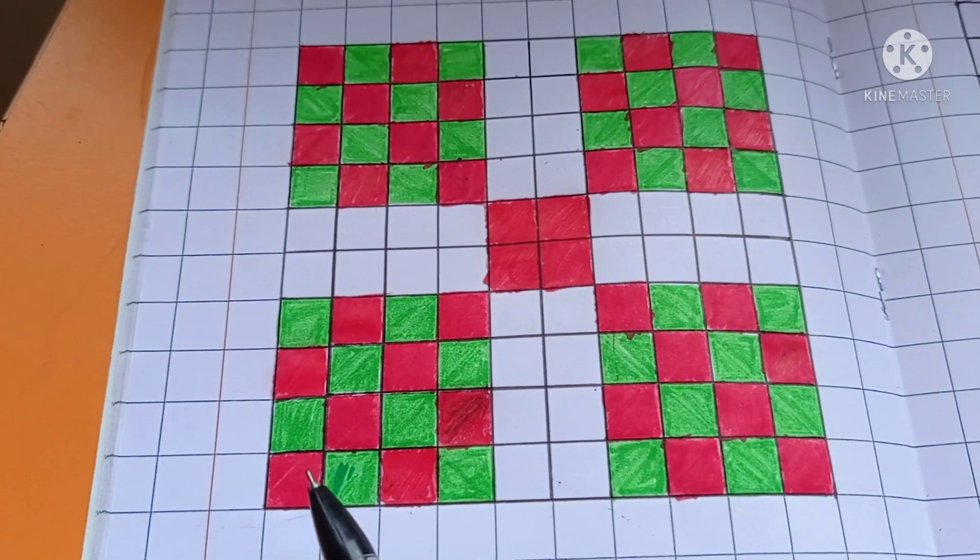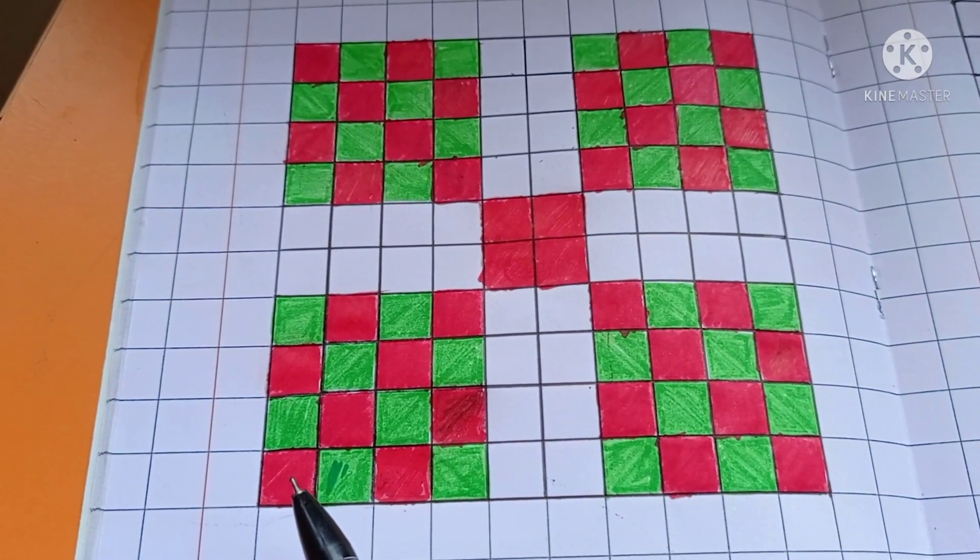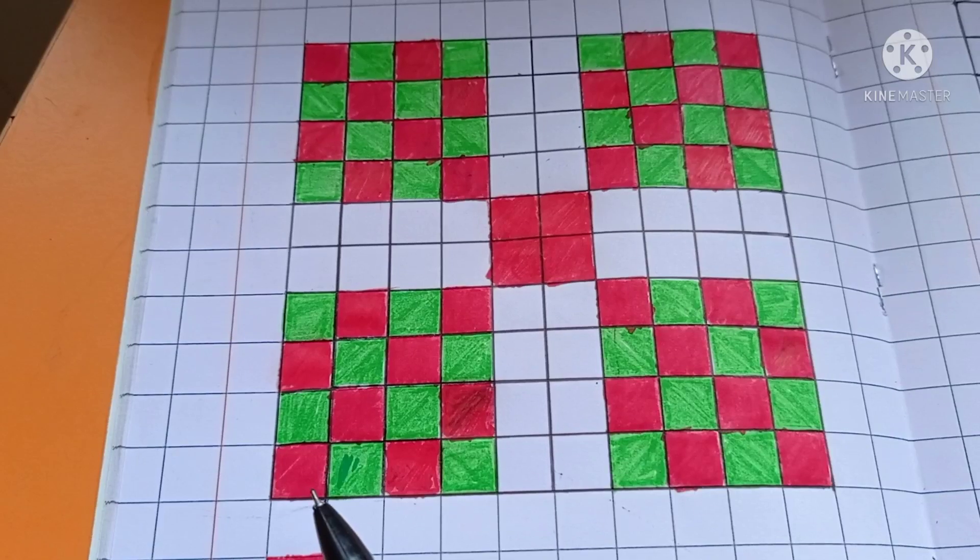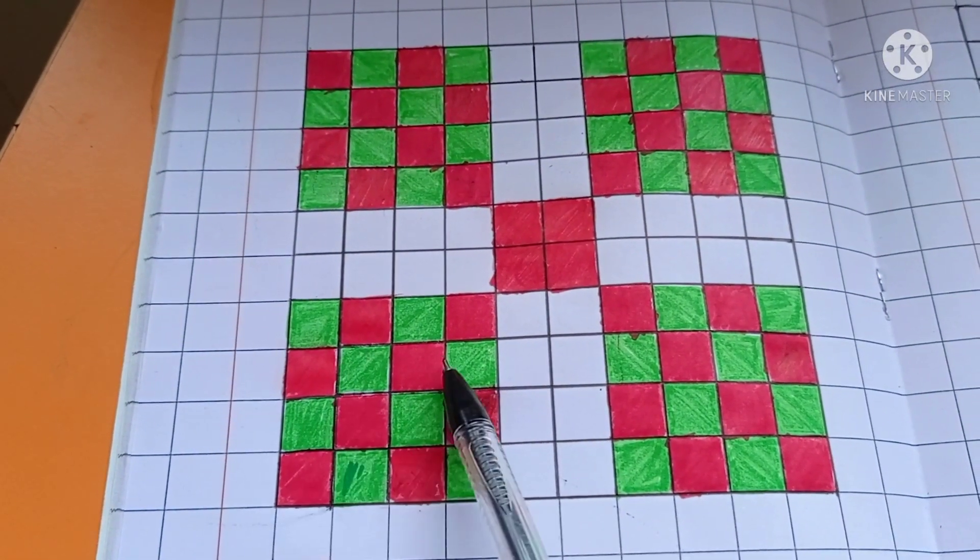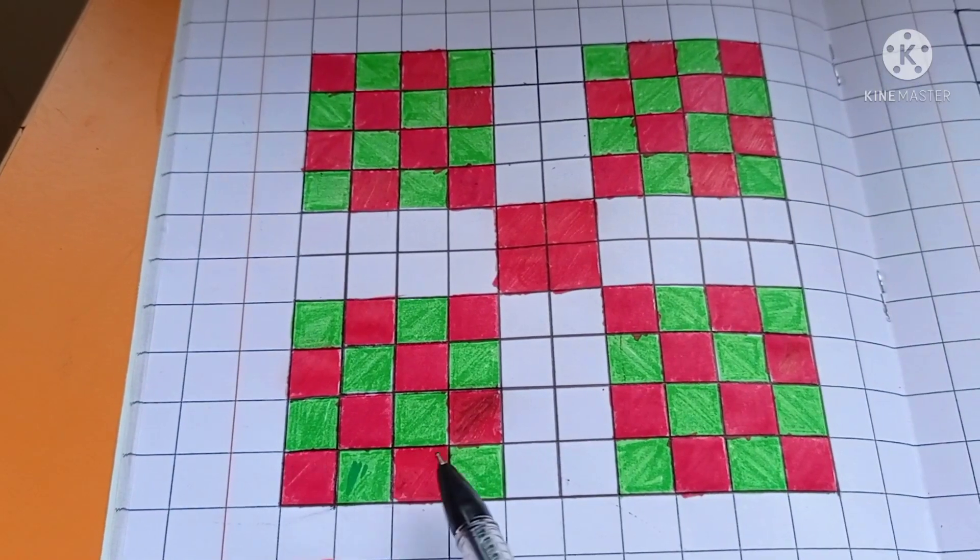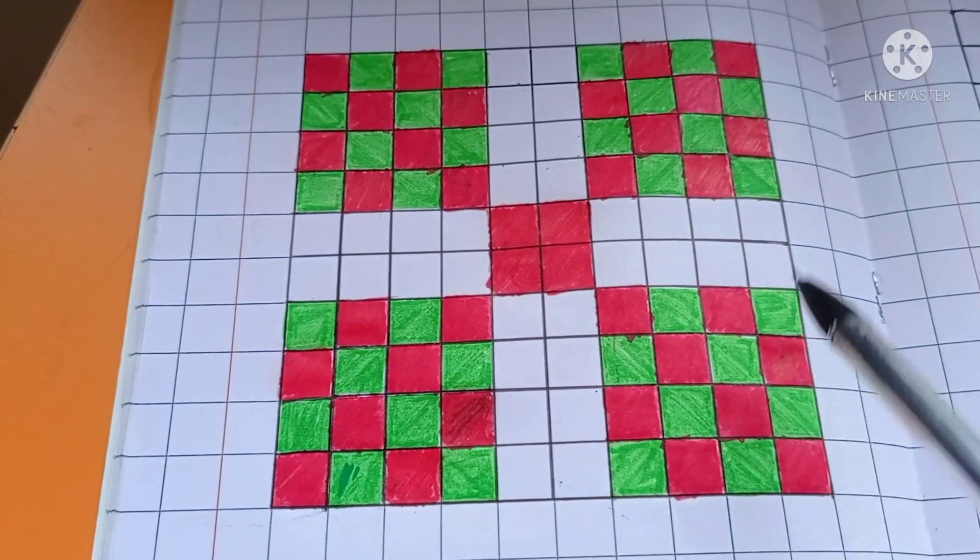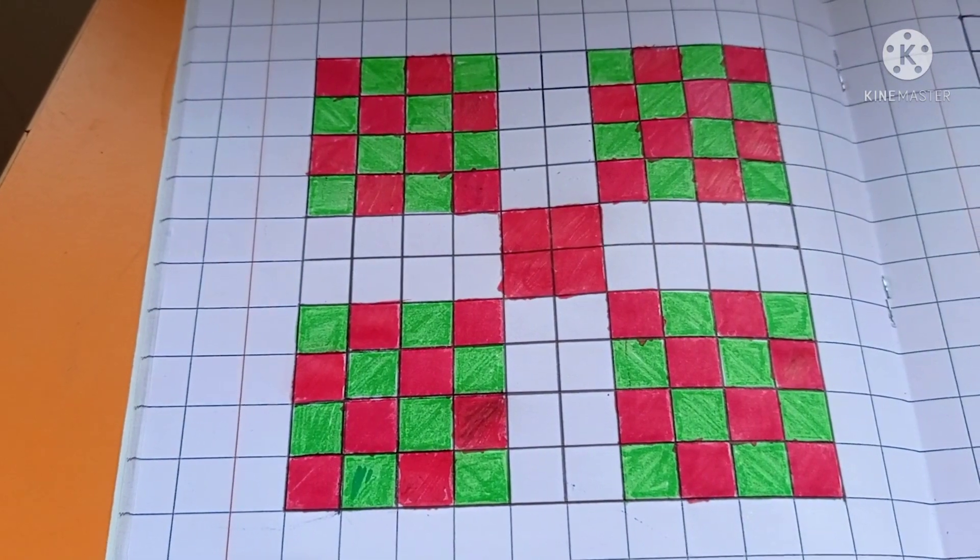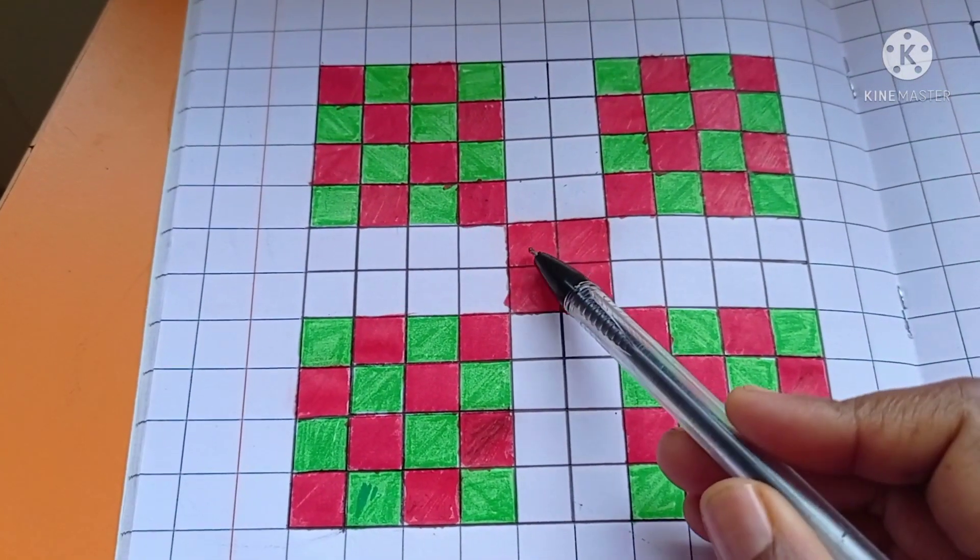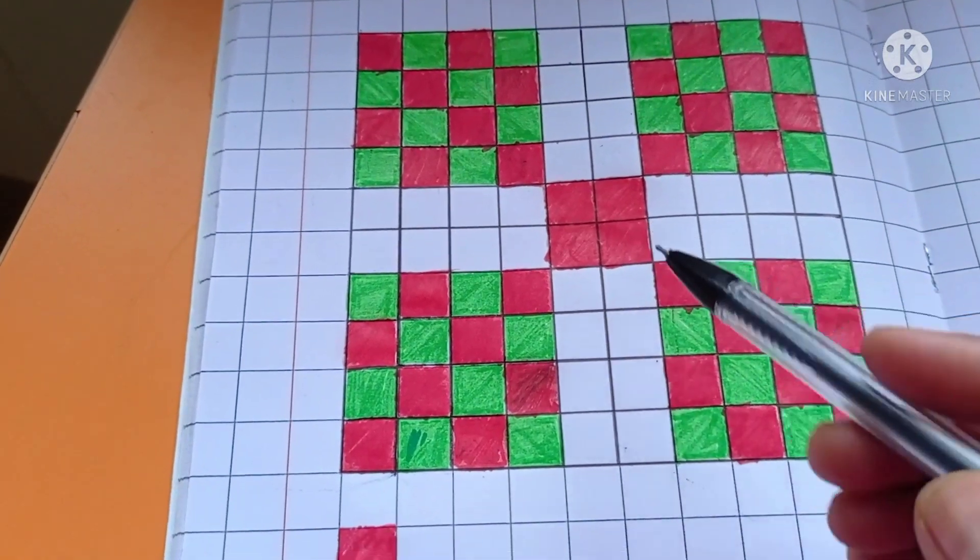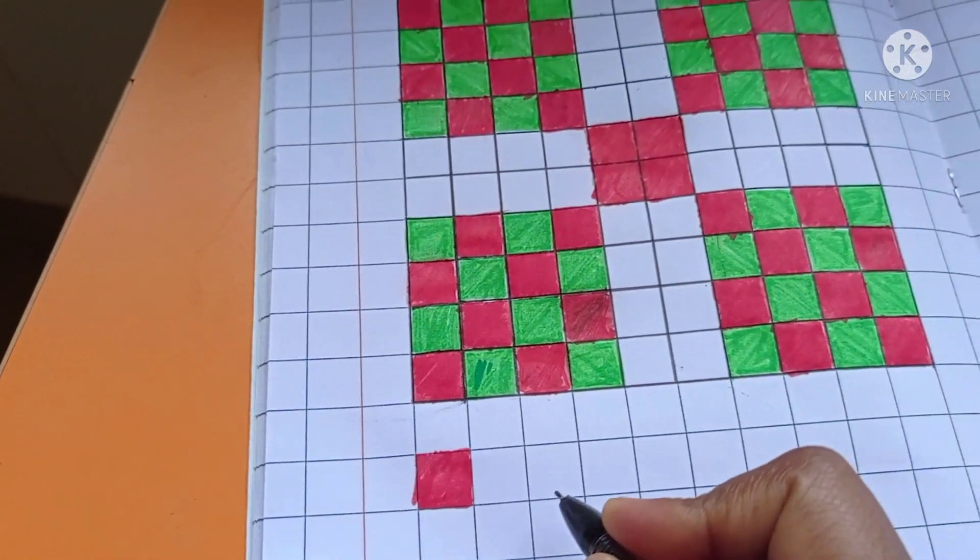So here the red color squares are 1, 2, 3, 4, 5, 6, 7, 8. Eight 4's are 32, 32 plus 4, 36. That means total number of parts 36.